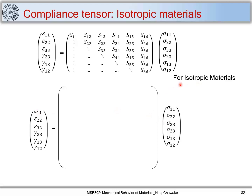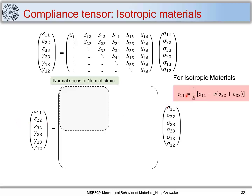We now consider the case of an isotropic material and focus on the nine components relating normal stresses to normal strains. We know the elastic stress-strain relationship for isotropic materials: the normal strain ε₁₁ = (1/E)[σ₁₁ − μ(σ₂₂ + σ₃₃)]. We derived this relation when dealing with isotropic materials.